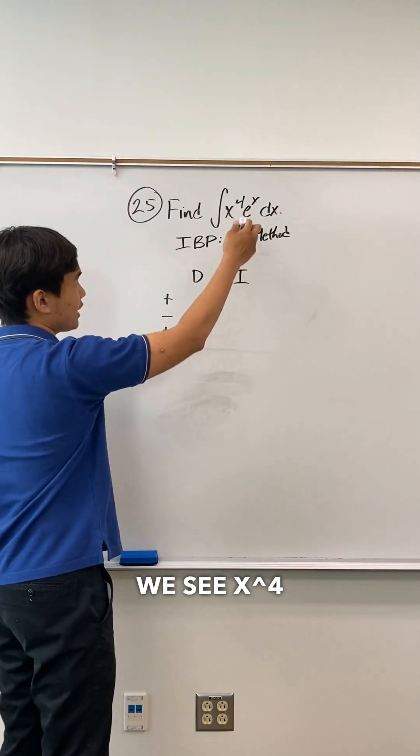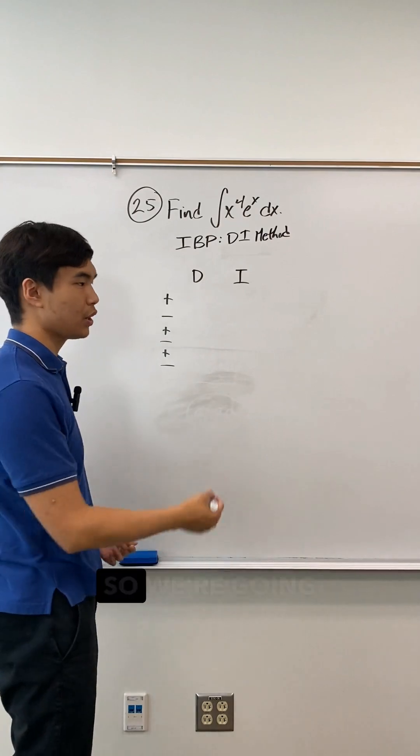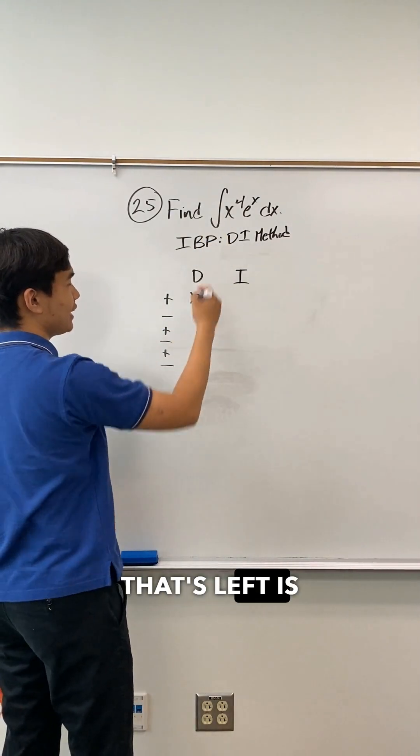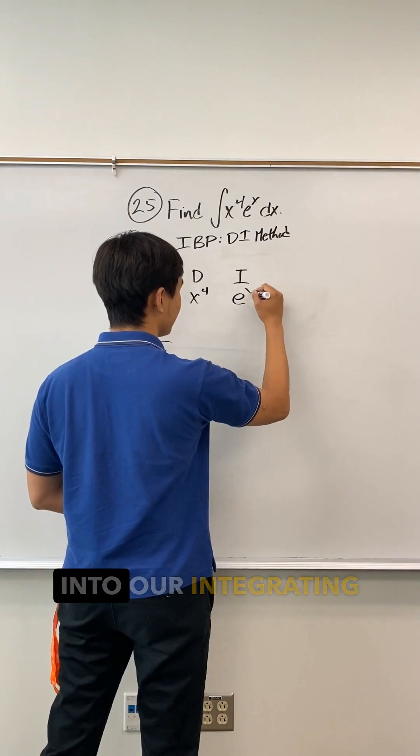You see x to the 4th is a polynomial which, if we differentiate it enough, will go to zero. So we're going to put x to the 4th in our D column. And the only one that's left is e to the x, so we're going to put e to the x into our integrating column.